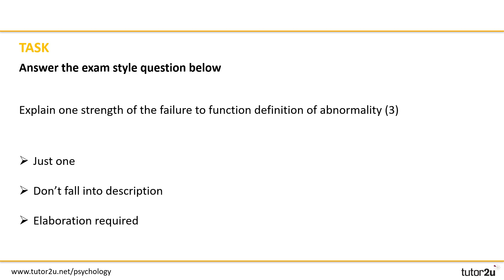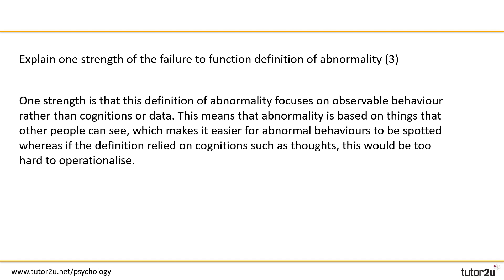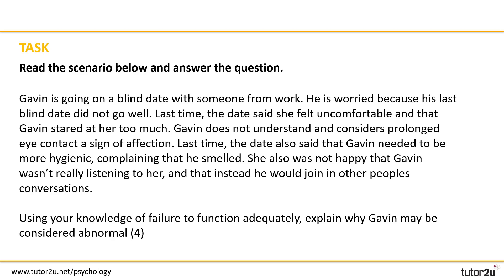You can see an example on the screen. One strength is that this definition of abnormality focuses on observable behavior rather than cognitions or data. This means that abnormality is based on things that other people can see, which makes it easier for abnormal behaviors to be spotted. Whereas if the definition relied on cognition such as thought, this would be too hard to operationalize. That's three out of three for this suggested answer — we've got good terminology, focus on the right definition, and one strength with real elaboration.